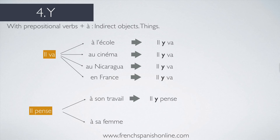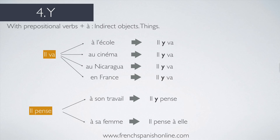But with il pense à sa femme — femme is a person, so Y doesn't work here. And you can't use il lui pense either, because the verb penser doesn't work with LUI. In this case you say il pense à elle. You can't say il lui pense — it's not correct French. Note: some people in France do say il y pense even for people, but the correct sentence is il pense à elle.